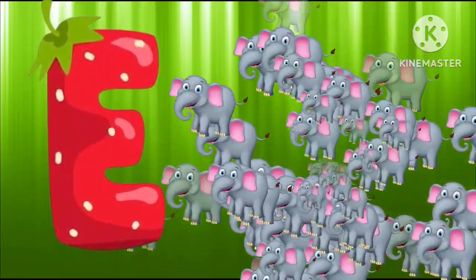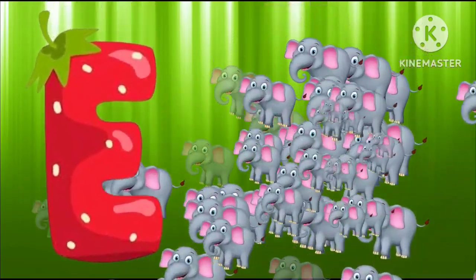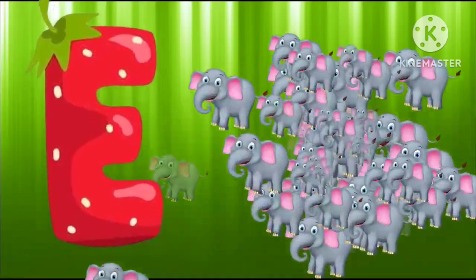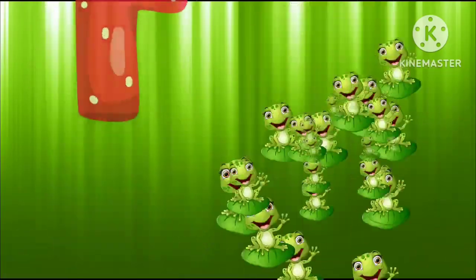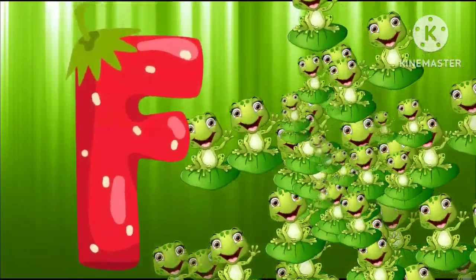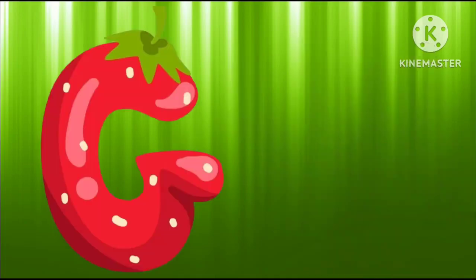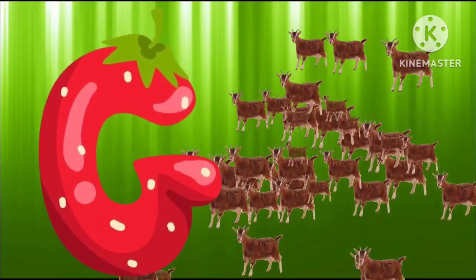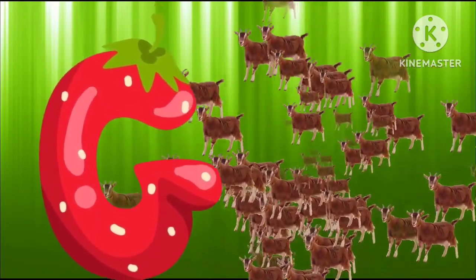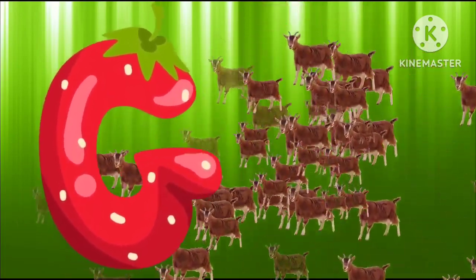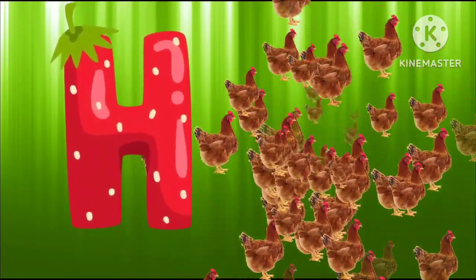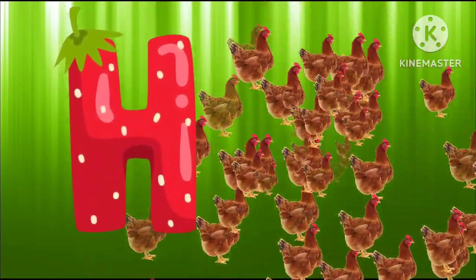E is for elephant, e-e-elephant. F is for frog, f-f-frog. G is for goat, g-g-goat. H is for hand, h-h-hand.